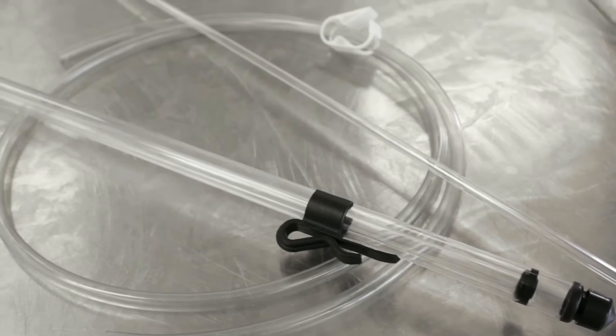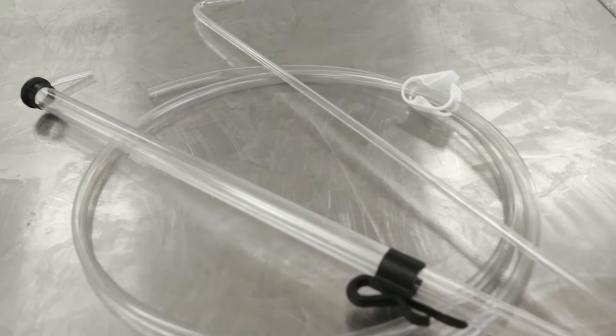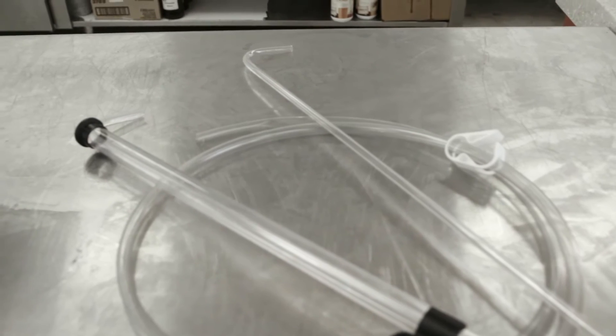If you are fermenting in a bucket, you could also use a sanitized cup or small pitcher to take your sample. You may also use an auto siphon or a racking cane to siphon out a sample to be used to test.